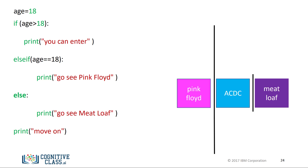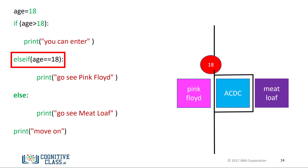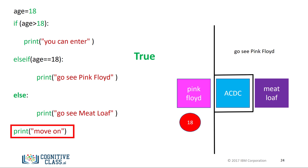Let's illustrate the code. An 18-year-old enters. They are not older than 18 years of age, therefore the condition is false. So the condition of the elif statement is checked — the condition is true — so we print 'GO SEE PINK FLOYD', then move on. If the variable age was 17, the statement 'GO SEE MEATLOAF' would print. Similarly, if the age was greater than 18, the statement 'YOU CAN ENTER' would print.